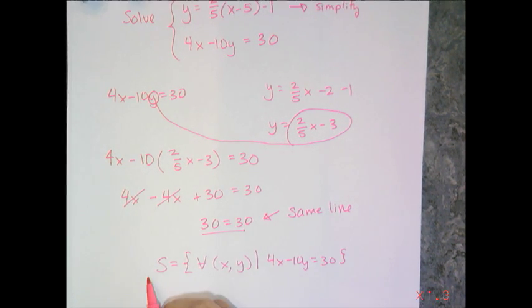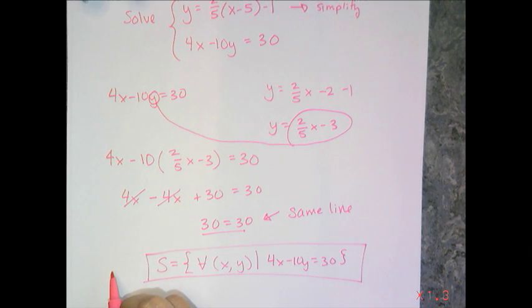And I'm just going to pick the 4x minus 10y equals 30. And so then this tells me that any point on the line 4x minus 10y equals 30 is a solution to the system.